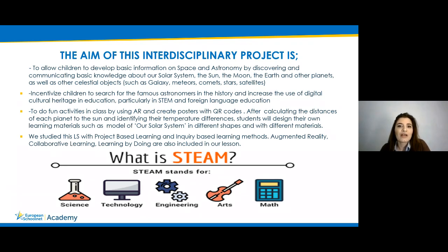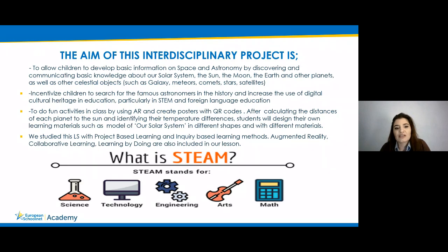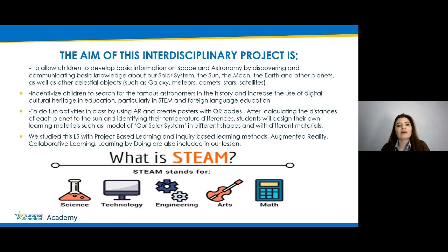We also created fun activities using augmented reality and created posters with QR codes. After calculating the distances of each planet to the sun and identifying their temperature differences, students designed their own learning materials such as models of our solar system in different shapes with different materials. We studied this learning scenario with project-based learning and inquiry-based learning methods; augmented reality, collaborative learning, and learning by doing are also included.